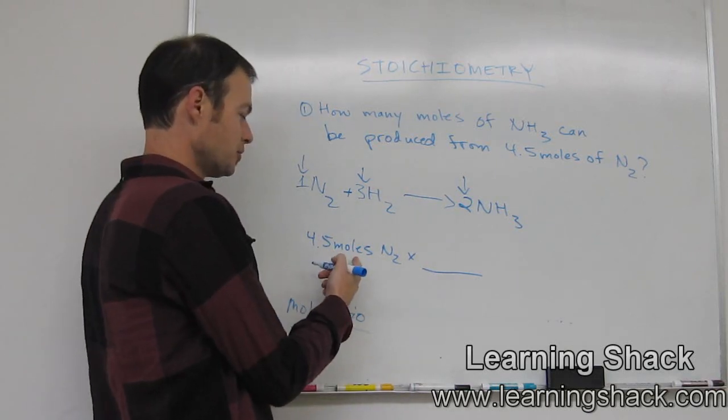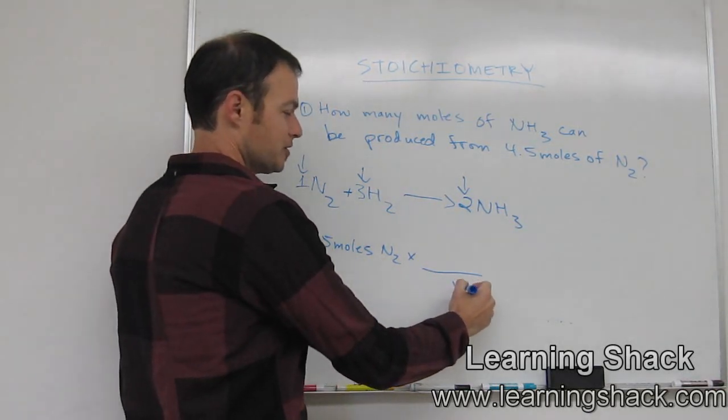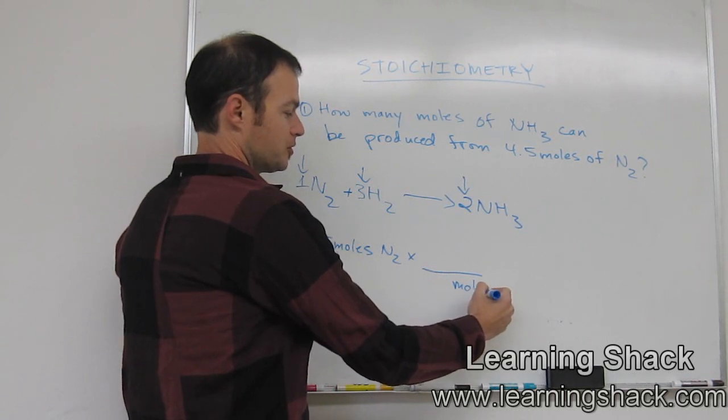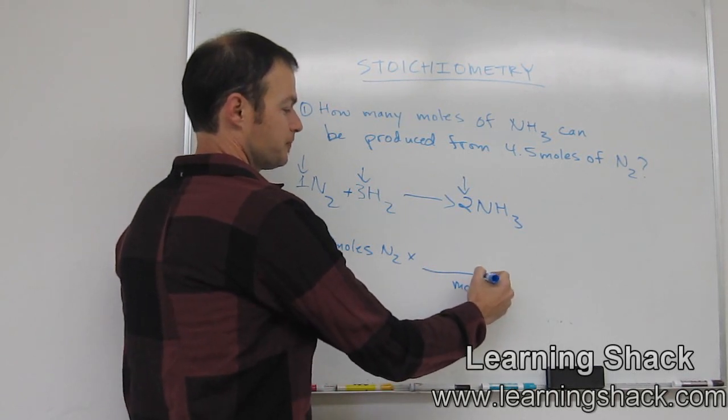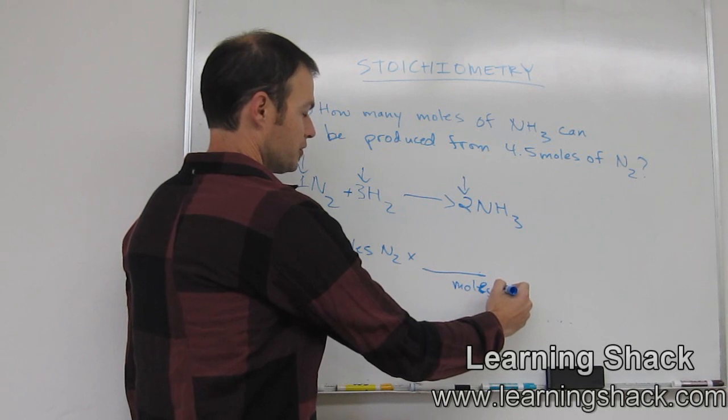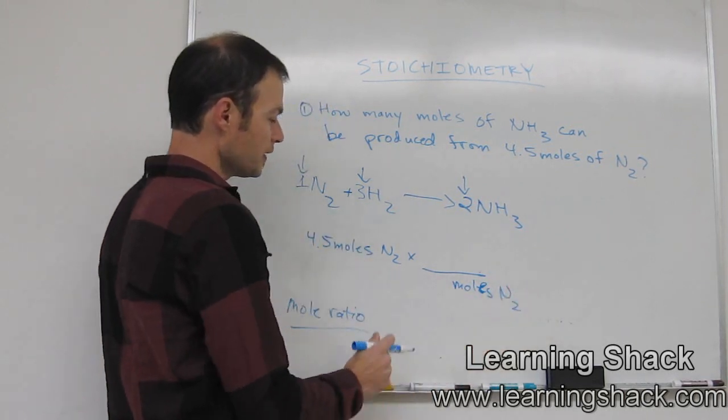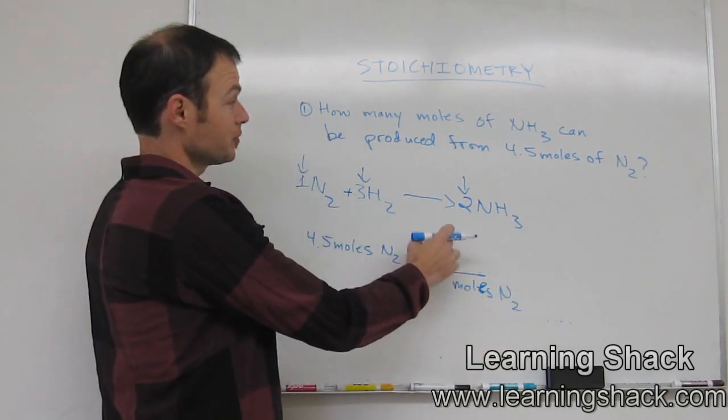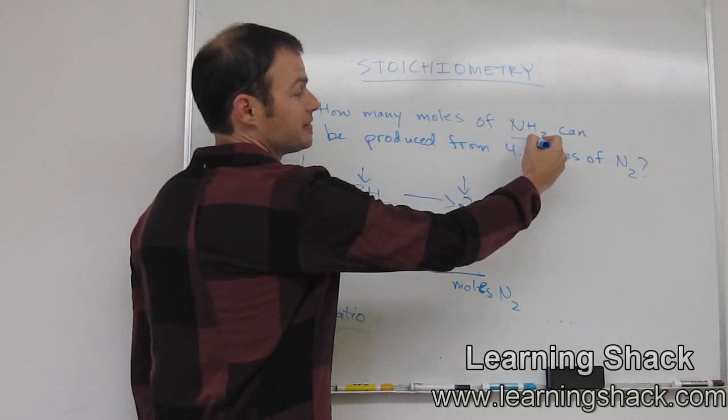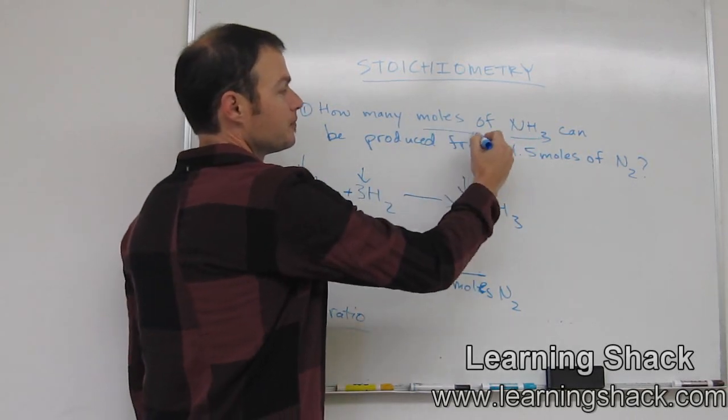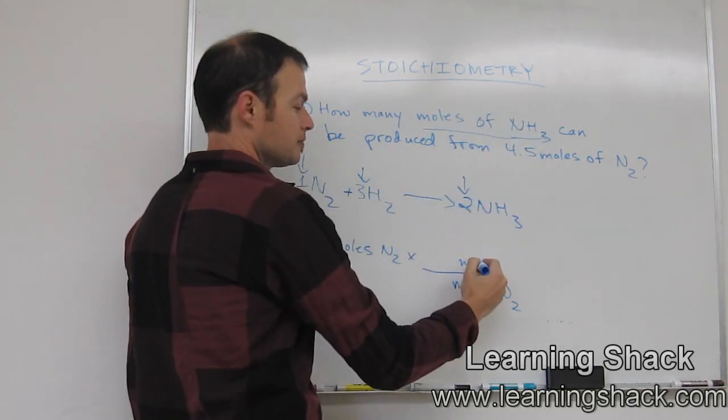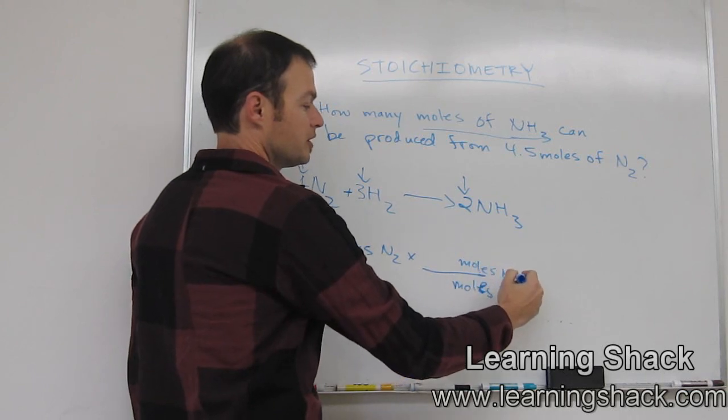So whatever units we have here, we want to write those down here. That's always the first step in our stoichiometry after we balance the equation. So this will be moles of N2. And then up here is going to be what we're looking for. So we're looking for how many moles of NH3. So here we're going to put moles of NH3.